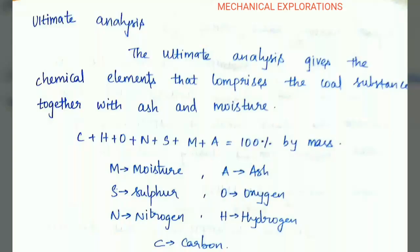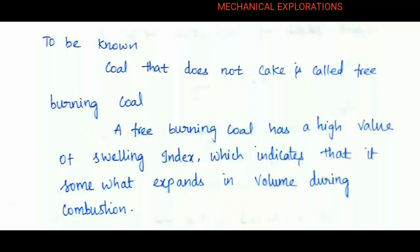Coming to ultimate analysis: the ultimate analysis gives the chemical elements that comprise the coal substance together with ash and moisture. The formula is: C + H + O + N + S + M + A = 100% by mass. Where M is moisture, S is sulfur, N is nitrogen, O is oxygen, A is ash, and C is carbon.